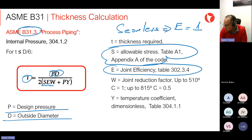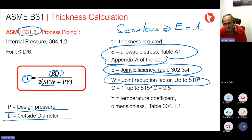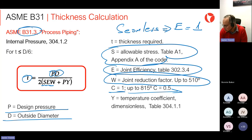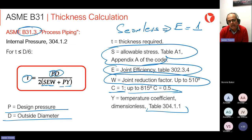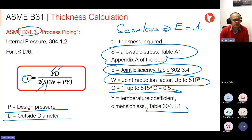There is also a coefficient W, which is a reduction factor to account for temperature. Up to 510 degrees Celsius, the coefficient is 1. If you go higher in temperature, you have to use different coefficients as shown on screen. There is also a pressure term and a coefficient related to temperature — dimensionless — found in Table 304.1.1. In summary, the most important variables involved in thickness calculation are: pressure, diameter, allowable stress, and joint efficiency. Those four variables are the most important ones — pretty straightforward.